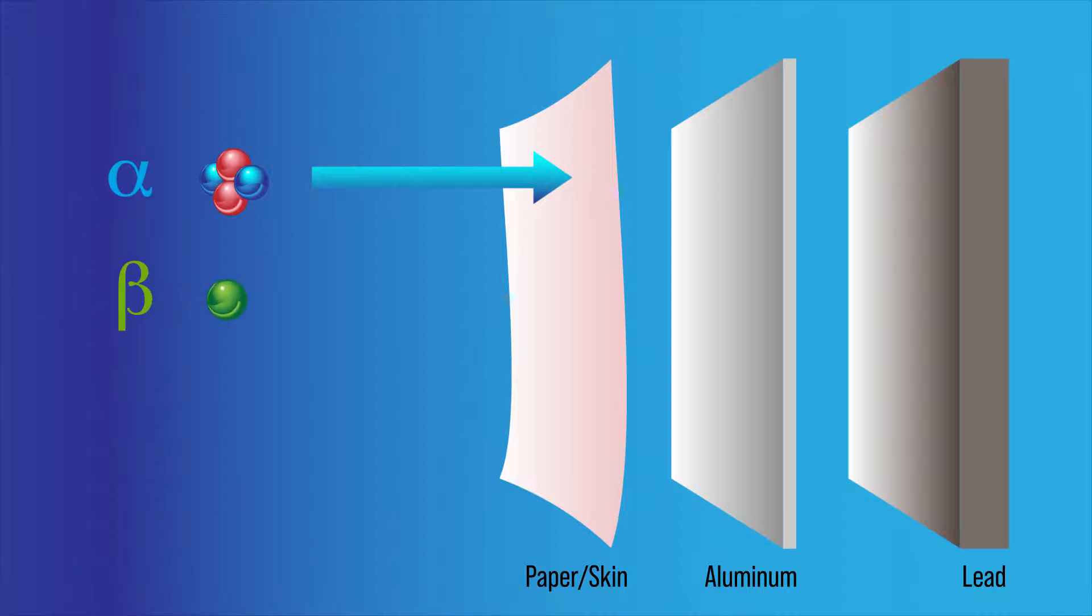Beta particles are energetic electrons emitted by the nucleus. They are created when a neutron disintegrates into a proton. Some isotopes disintegrate by converting a proton into a neutron, thereby emitting a positron. These particles can penetrate the material more than the alpha particles and at least one aluminium plate is needed to block most beta particles.